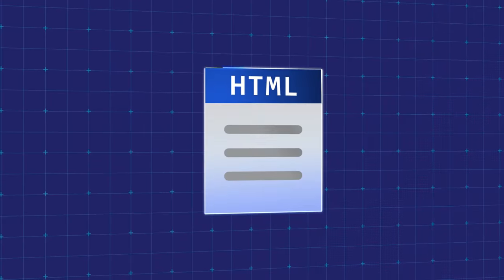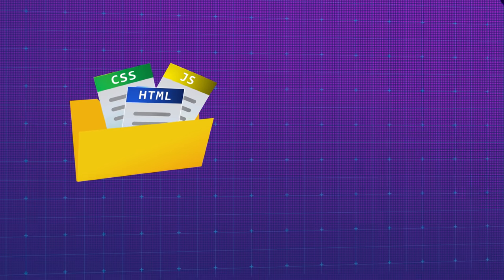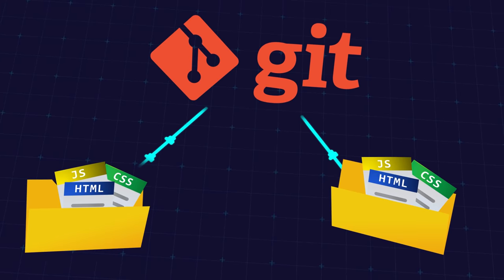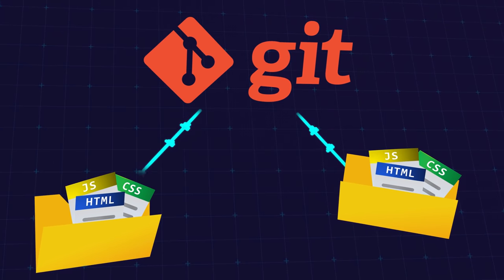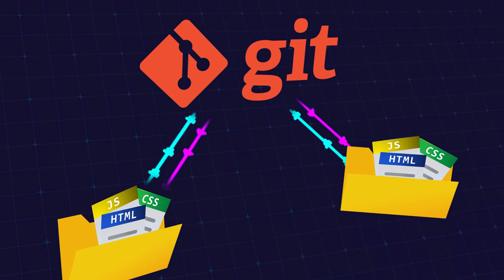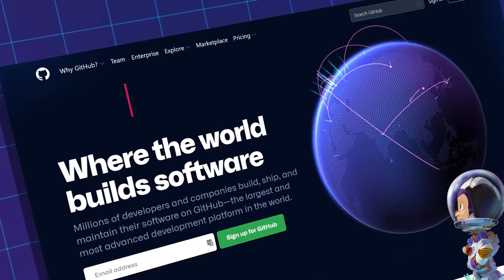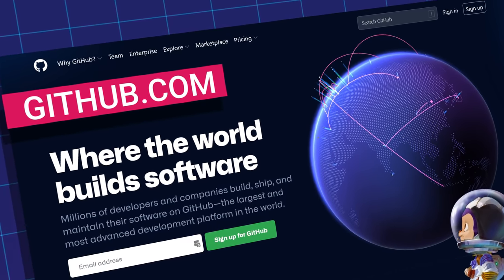Git also makes working on a team a lot easier. Each developer can work on a copy of the project on their own computer. This copy is stored in a folder connected to Git, which is called a local repository. The developers can then send their code changes up to the main remote repository, which is stored online, and get code changes made by other developers. The most popular place to store your remote repository is GitHub, which is owned by Microsoft and is free to use.